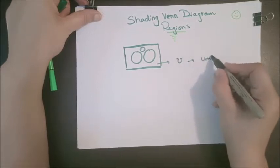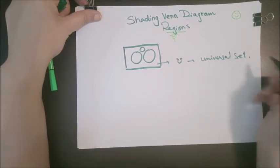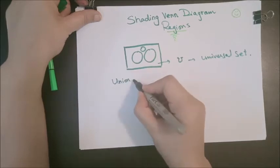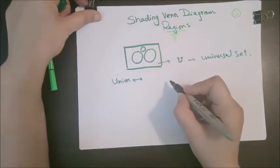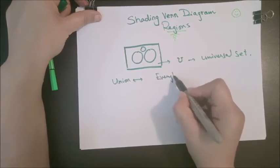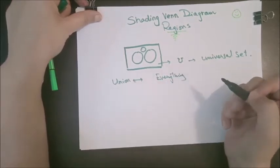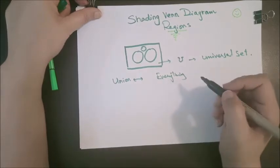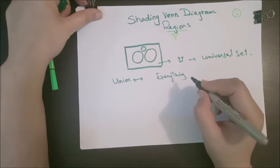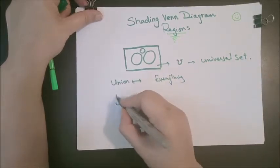Second thing is union. What is union? It means everything — whenever you are going to shade the union of any two or three sets, you have to shade each and everything present in those sets. Next is intersection.